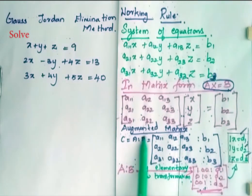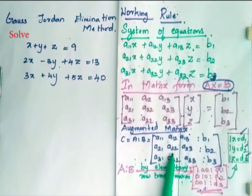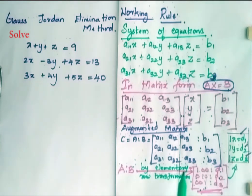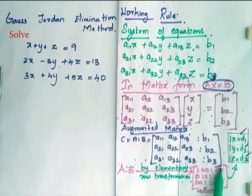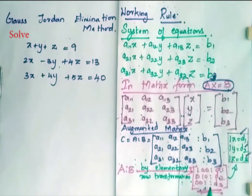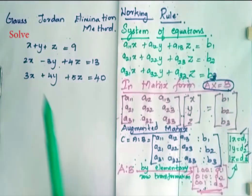When you go for representing them in augmented matrix, you will have a form like this. Then by elementary row transformation, reduce this matrix so that you will get the identity form: 1, 0, 0 / 0, 1, 0 / 0, 0, 1 with d1, d2, d3 on the right. From this, 1·x = d1, 1·y = d2, and 1·z = d3. Using this, we are going to solve the system.